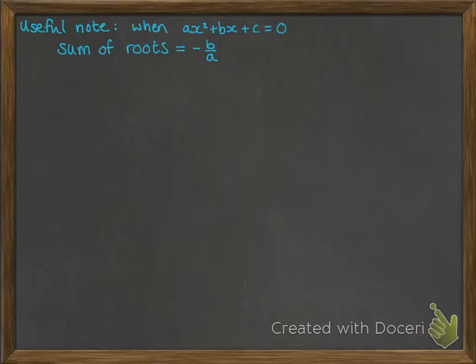This video looks at the discriminant and then simultaneous equations that involve quadratics. Before we do that, there's a useful handy thing to know: when you've got a quadratic, the sum of the roots is always equal to minus b over a. That's helpful when you're checking your answers.